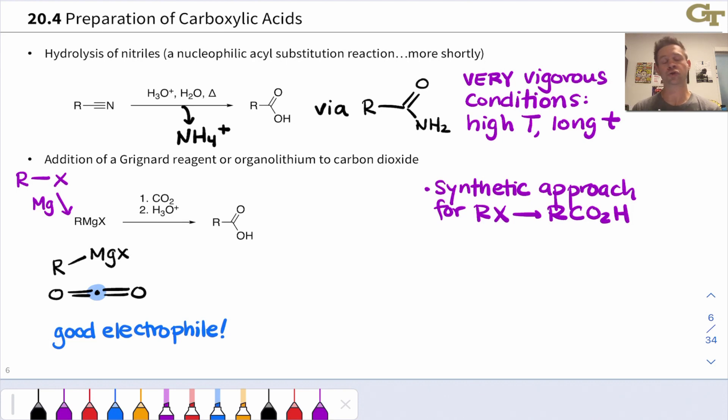Treatment of a Grignard reagent with dry ice results in nucleophilic addition of that R group to CO2, giving a carboxylate anion. Treatment of that anion with acid will protonate it and give the neutral carboxylic acid product. So this is a pretty cool way to make carboxylic acid starting from an organohalide. If you can get a halogen atom, X, connected to some organic group, we now know a way to convert that halogen atom into a carboxyl group through this approach.